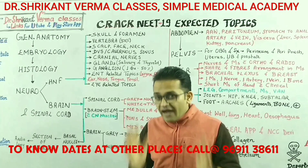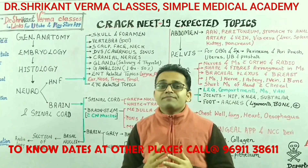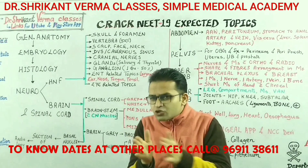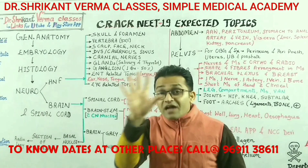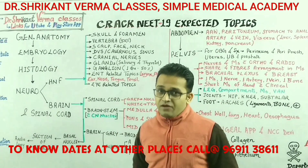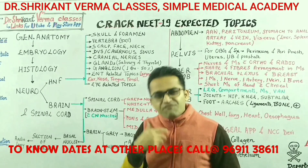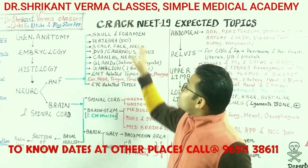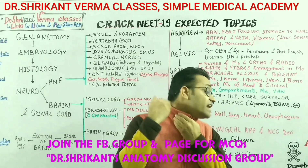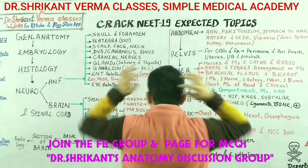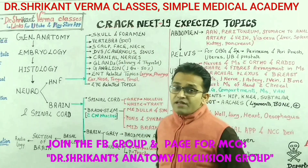Then you have to study the face part layer by layer: skin, superficial fascia, deep fascia, and then muscles — the muscles of facial expression. You have to study the face according to the muscles, and also the veins, arteries, and nerves of the face, as well as lymphatic drainage of the face. After the face part, you have to study the neck, which is divided into the anterior triangle in front of the sternocleidomastoid, the posterior triangle behind it, and the suboccipital triangle below the occipital bone. You have to revise the neck part under these three headings.